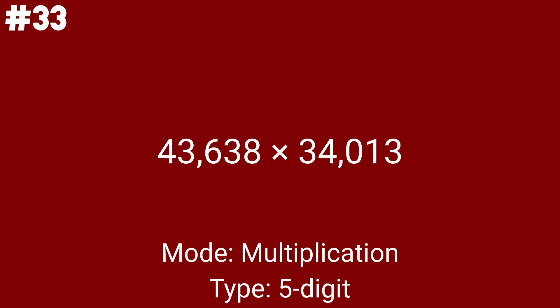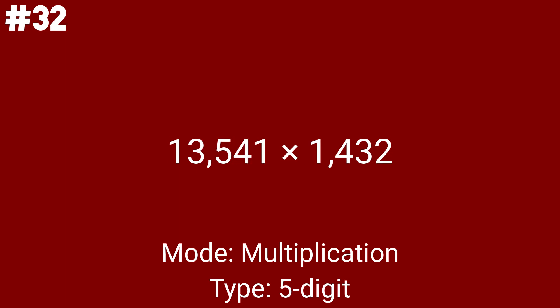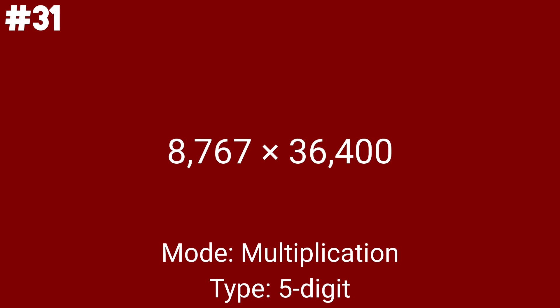We have 7 more multiplications after this. A 5 by 4 is 13541 times 1432, and this is problem number 24, also known as 2 dozen. This one is 8767 times 36400, the last multiplication problem with 5 digits. You can also call this a quintuple-digit multiplication problem, and this is a 4 by 5.